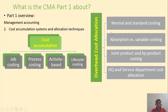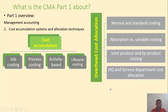In this regard, we're going to discuss normal and standard costing, absorption versus variable costing, joint product and byproduct costing, in addition to the allocation of common costs to departments. We'll also discuss headquarter and service department cost allocation to business units.